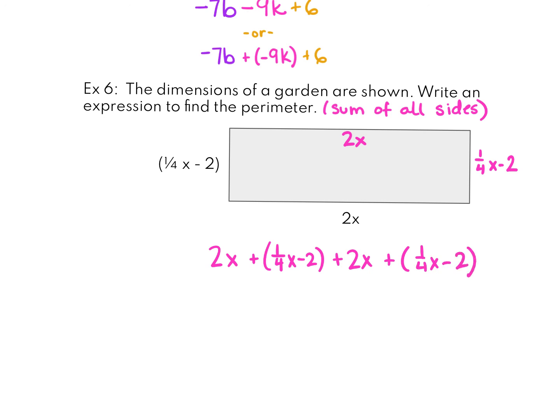First thing that I'm going to do is I'm just going to rewrite this without the parentheses here. And now I have 2x, a quarter of an x, another 2x and another quarter of an x. That's going to give me 4 and a half x and then I have a negative 2 and a negative 2 and that's negative 4. So my perimeter is 4 and a half x minus 4.